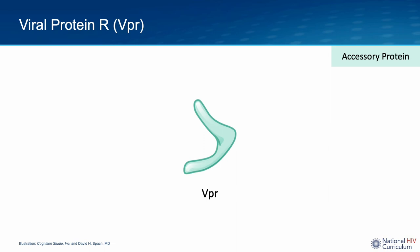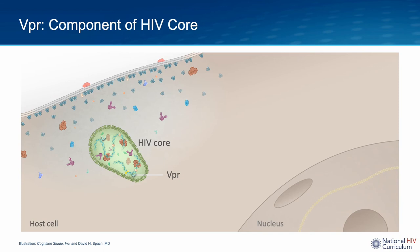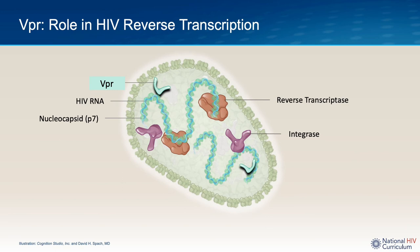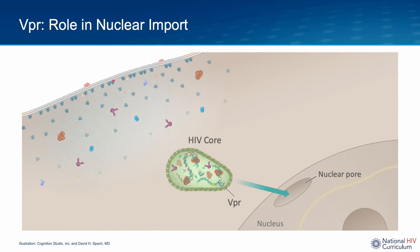Viral protein R, or VPR for short, is an HIV accessory protein postulated to have multiple roles, including several early in the HIV life cycle. After HIV enters the host cell, VPR is inside the HIV core. Some models suggest VPR plays a role in modulating the initiation of HIV reverse transcription. VPR is also thought to facilitate nuclear import of the HIV core.